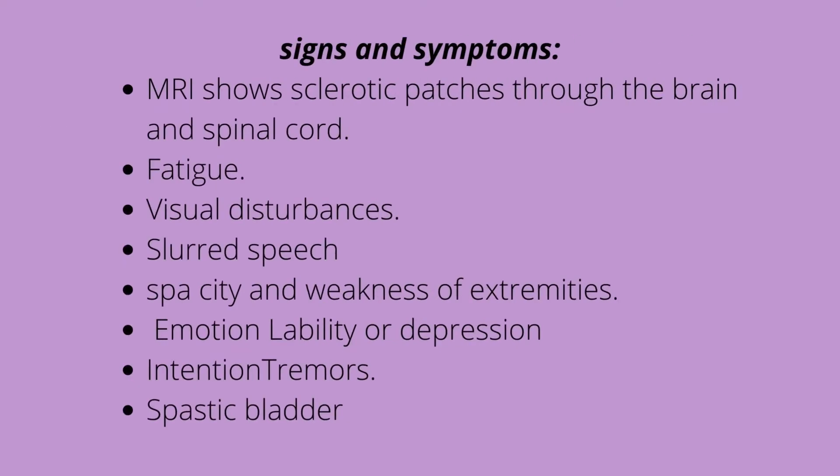Some signs and symptoms of MS include: once an MRI is performed, it shows sclerotic patches throughout the brain and the spinal cord — white patches. The patient will depict fatigue, visual disturbances, blurry vision, and diplopia. They'll have slurred speech, spasticity and weakness of extremities, sometimes numbness and pain, emotional lability or depression, intention tremors, as well as spastic bladder.